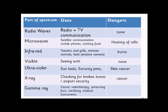Finally, gamma rays are used for a range of things including treating cancer — they can kill cancer cells, though they also kill healthy cells, so exposure to healthy tissue is minimised. They're also used to preserve fruit by killing bacteria on it, and for sterilising metal instruments. Again, because they are such high-energy waves, they can also potentially cause cancer.